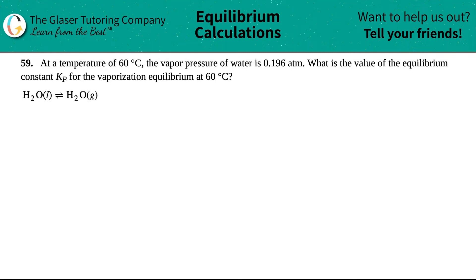Number 59. At a temperature of 60 degrees Celsius, the vapor pressure of water is 0.196 atm. What is the value of the equilibrium constant, Kp, for the vaporization equilibrium at 60 degrees Celsius? They give us this formula.